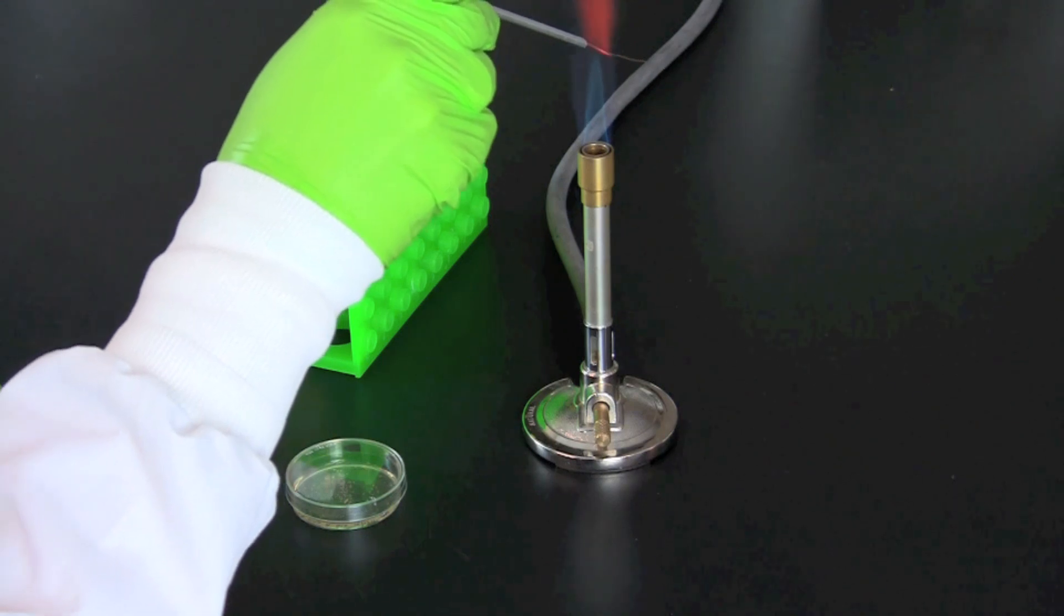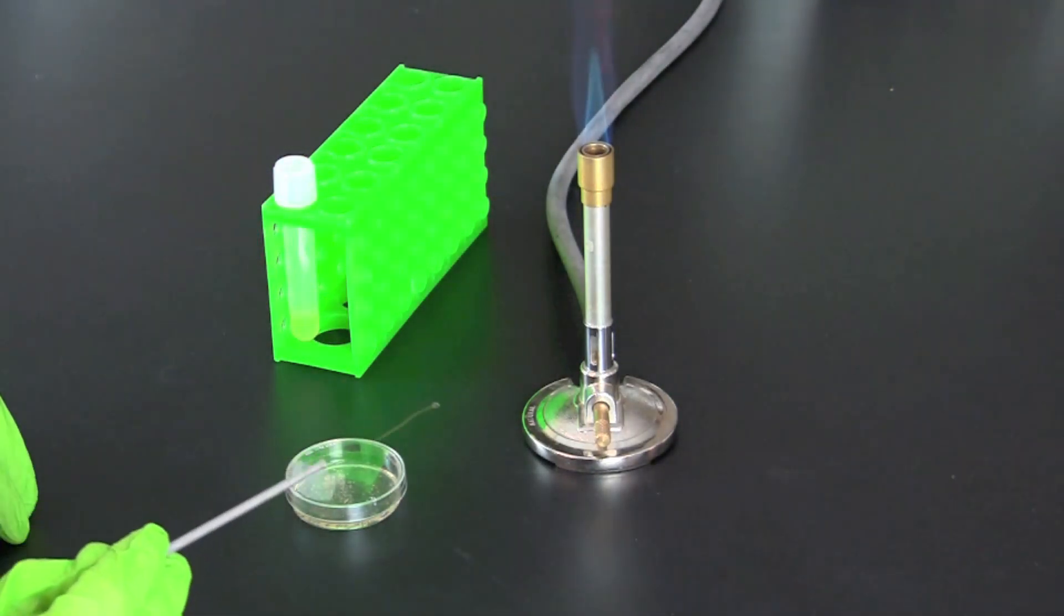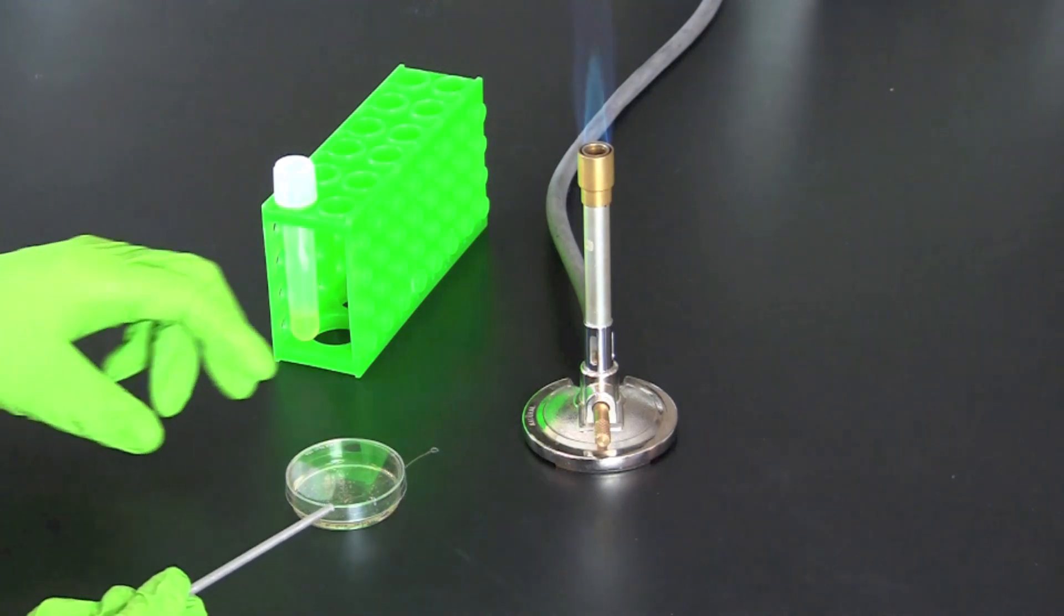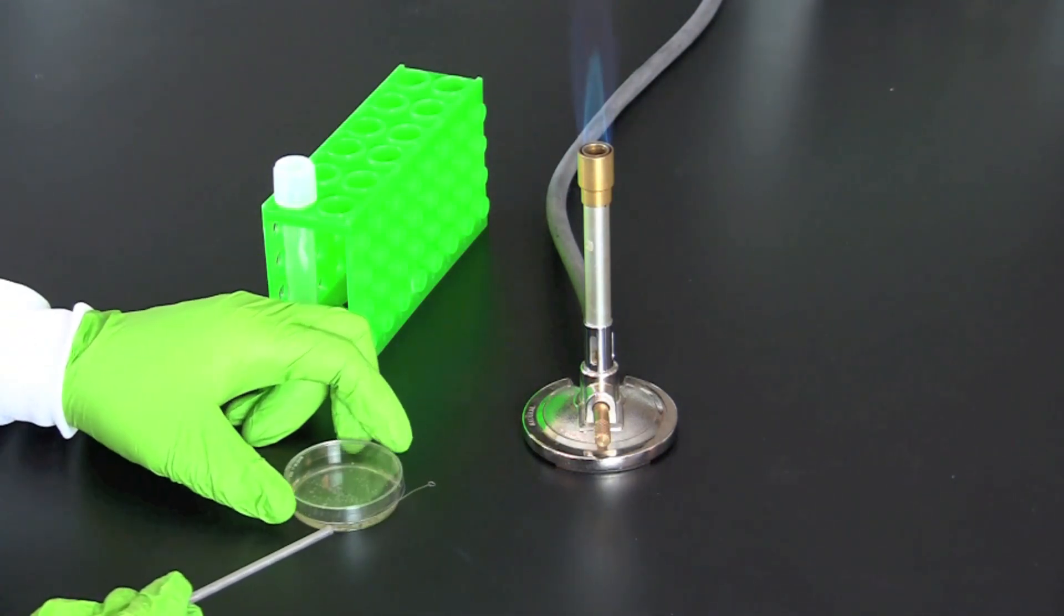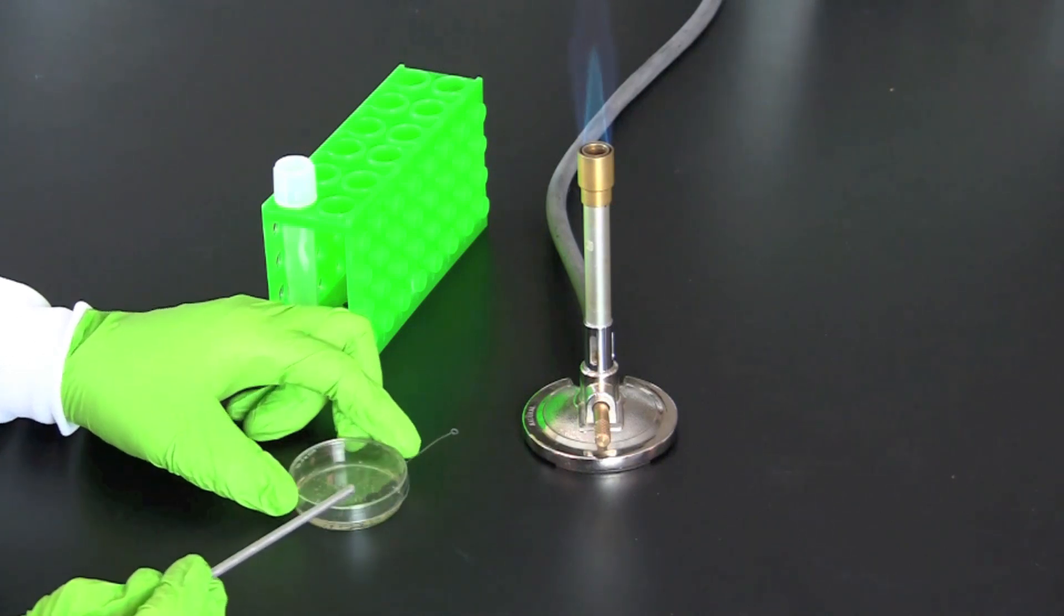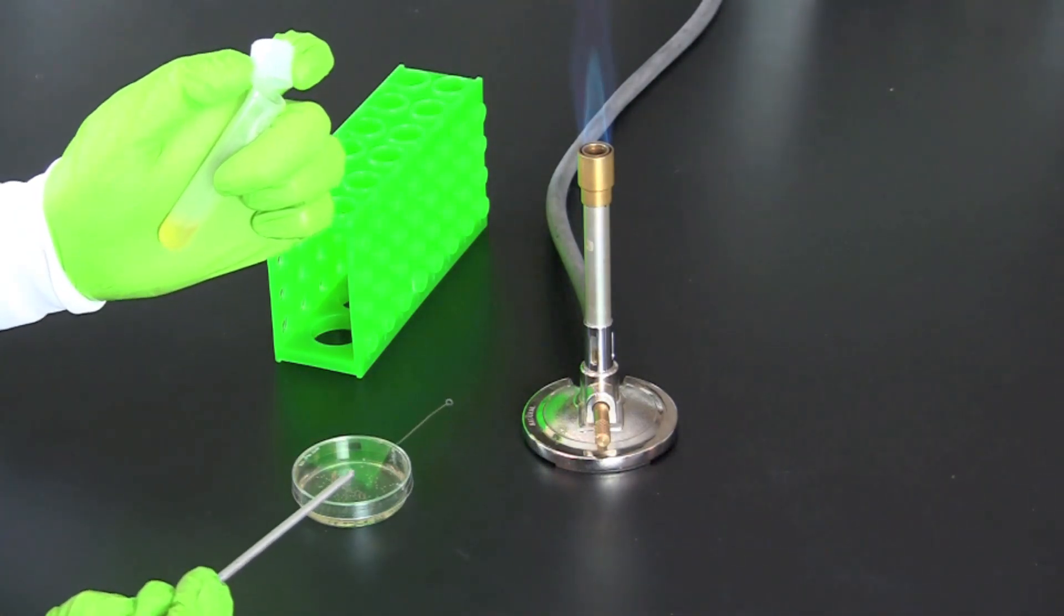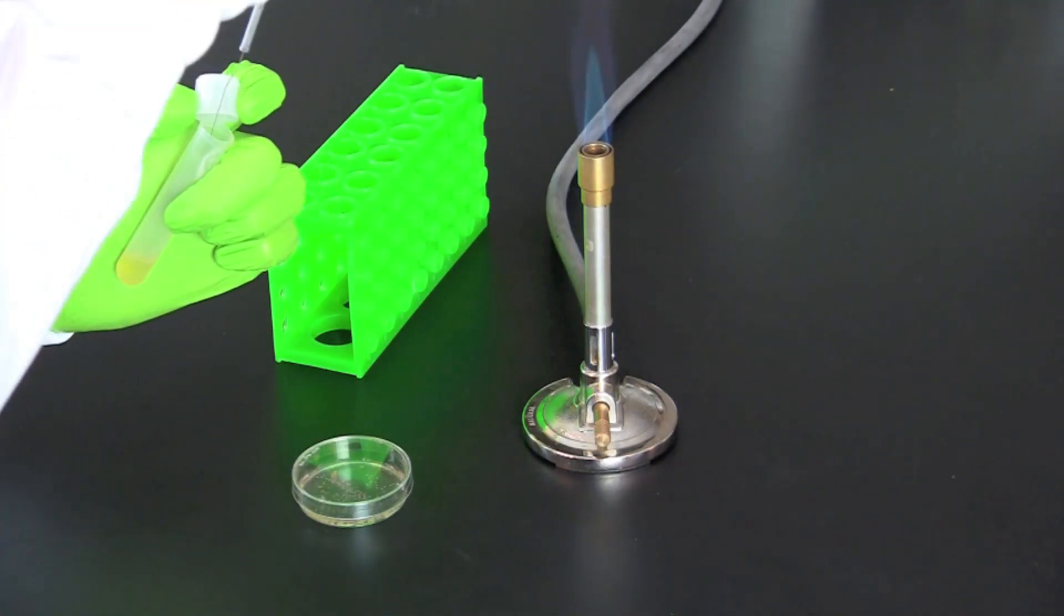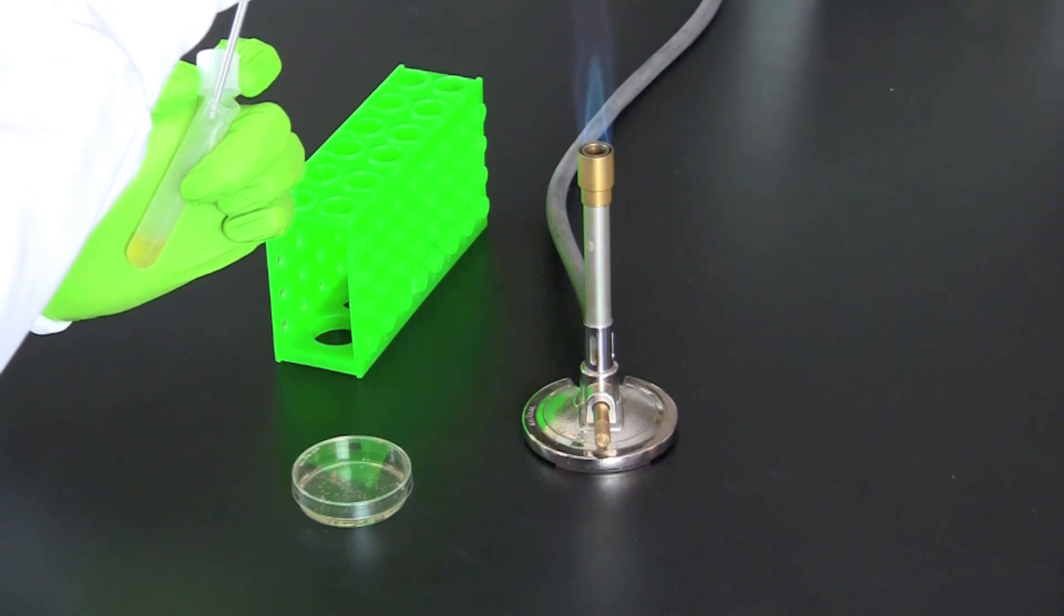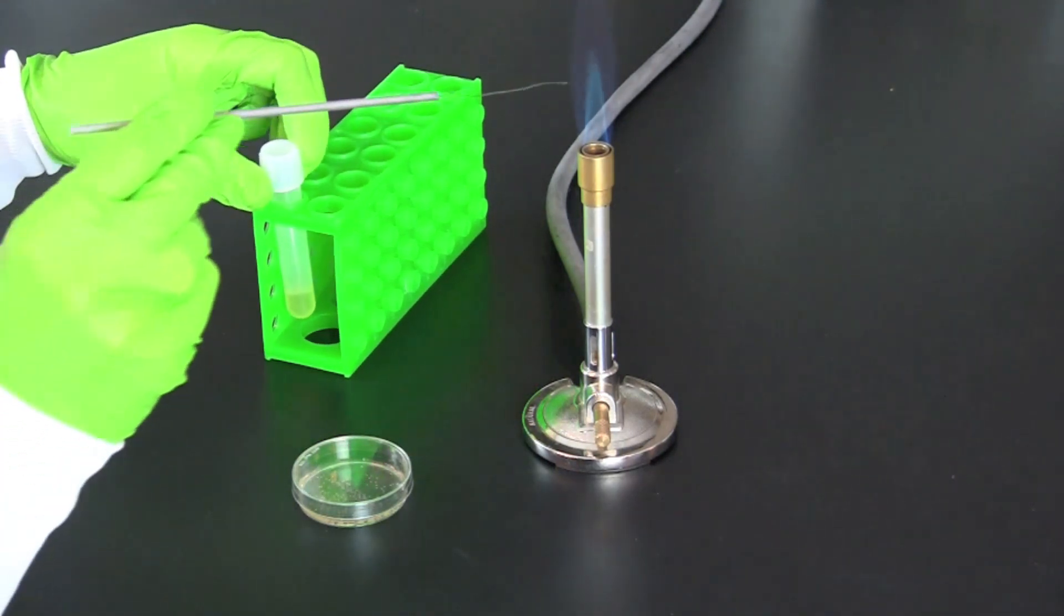Sterilize an inoculation loop, then using aseptic technique transfer a single colony of bacteria from a petri plate to a properly labeled culture tube with nutrient broth. When finished, recap the tube and sterilize the inoculation loop.